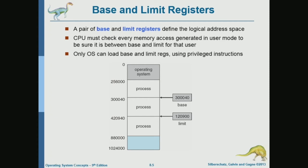Each process has a single piece of memory containing the code and data that process needs. Each block of memory for each process has a start address and a limit. The base is the start address for that memory block, and the limit is the maximum offset. For example, if a process has memory addresses ranging from 300,000 to 420,000, then the base is 304,000 and the limit is 120,900.